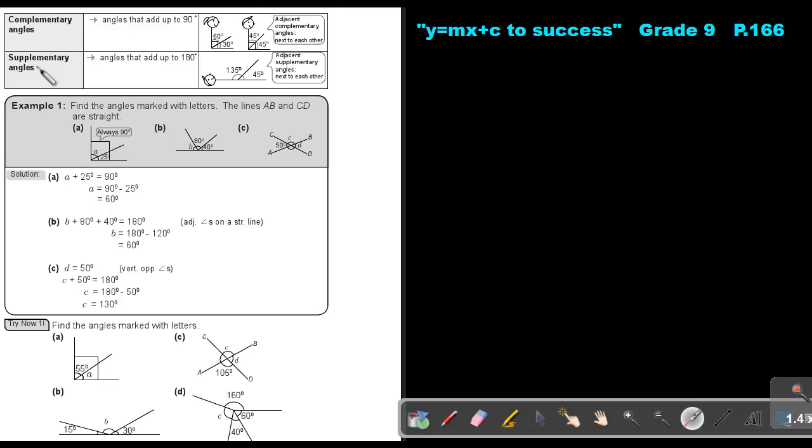What is supplementary angles? Angles that add up to 180. So this angle plus this angle will be 180. So adjacent supplementary angles next to each other. Let's look at an example.